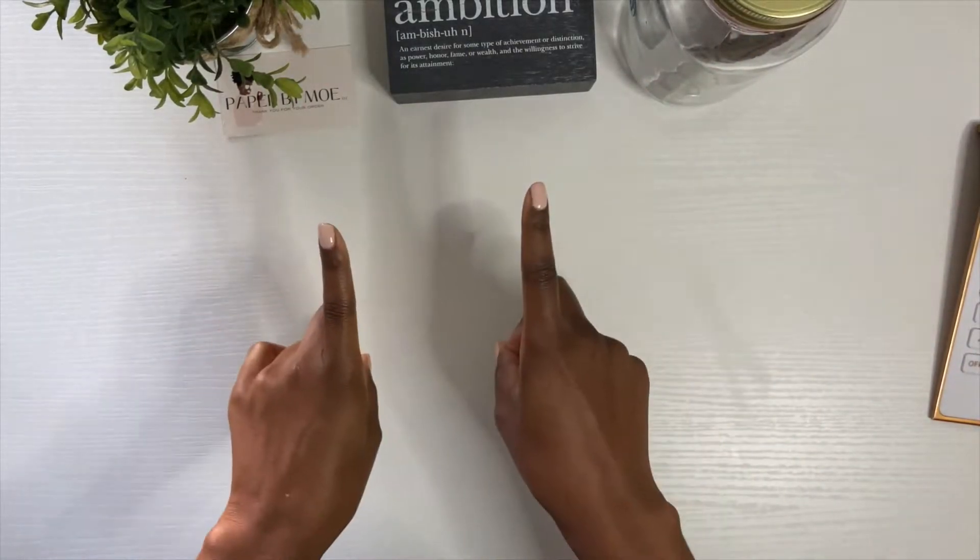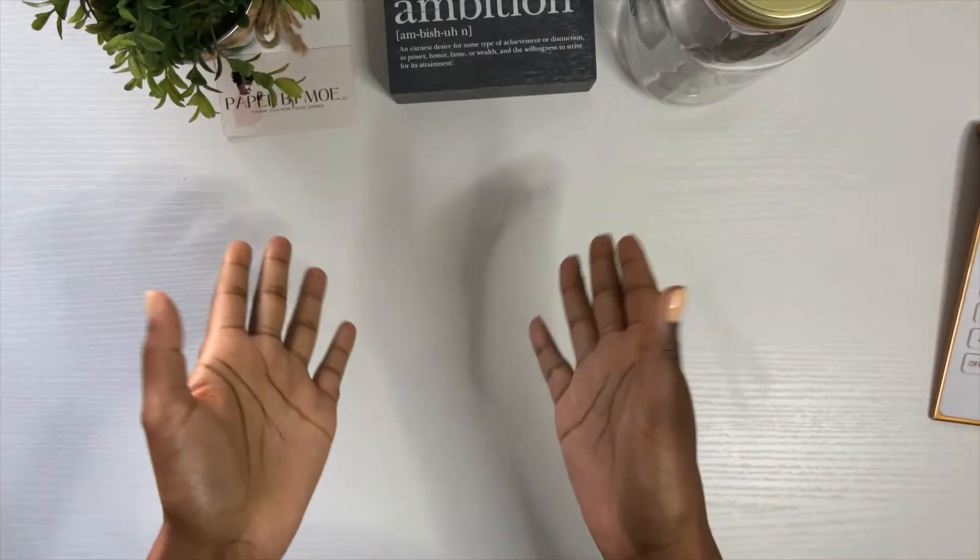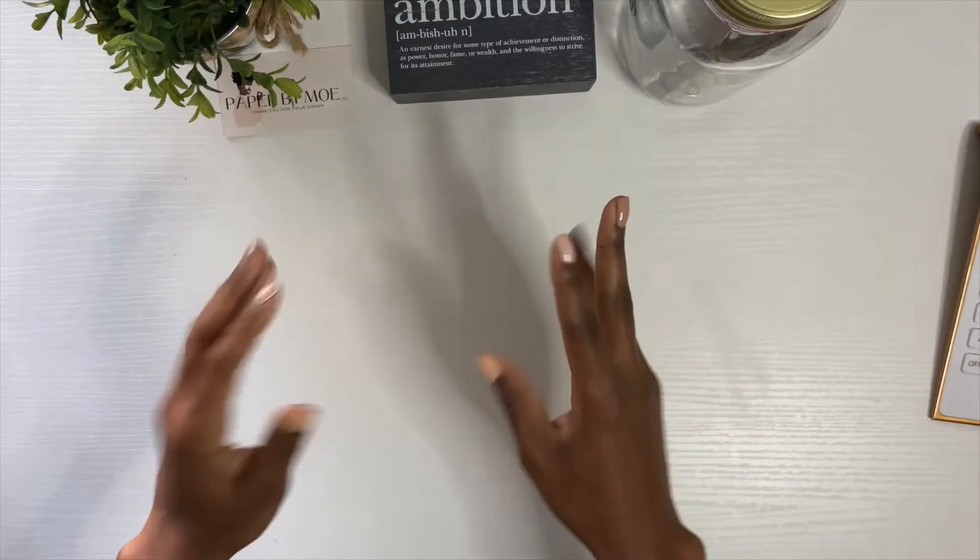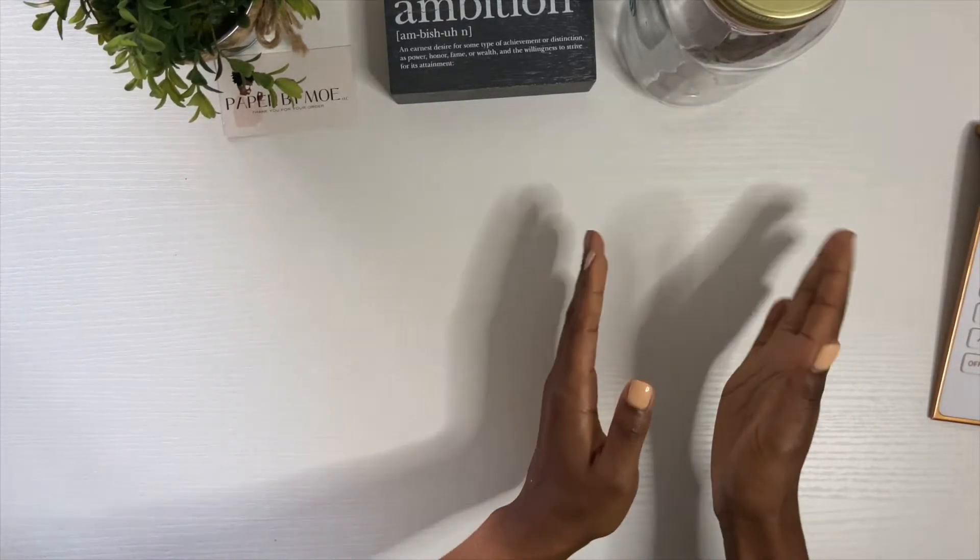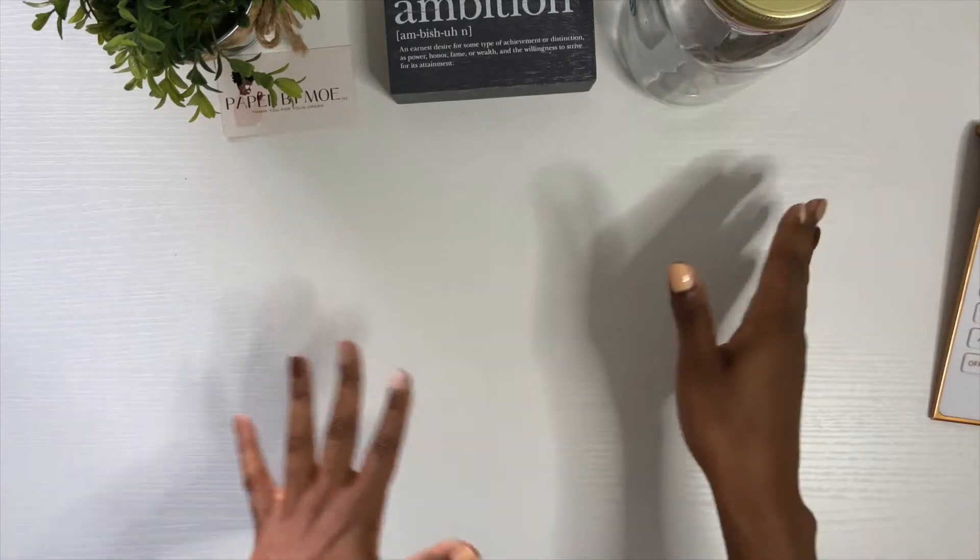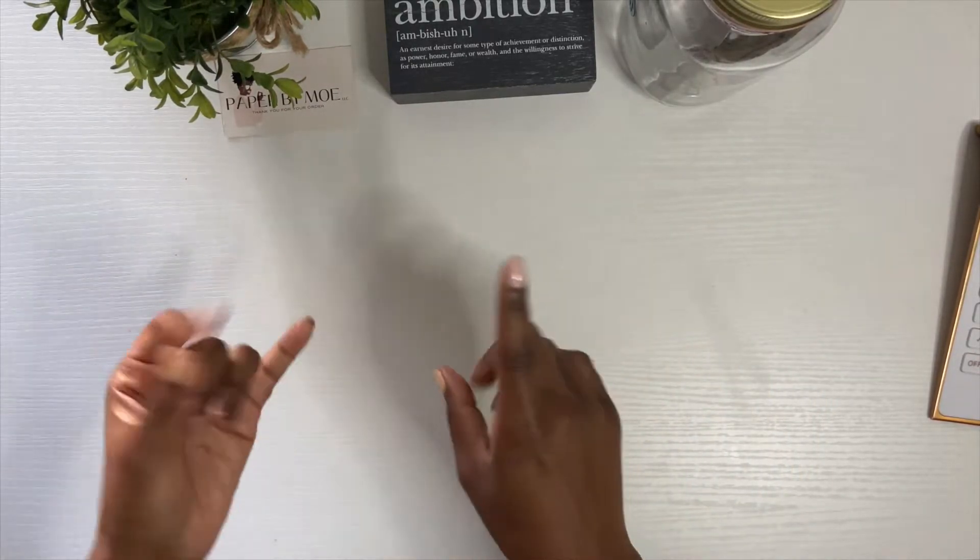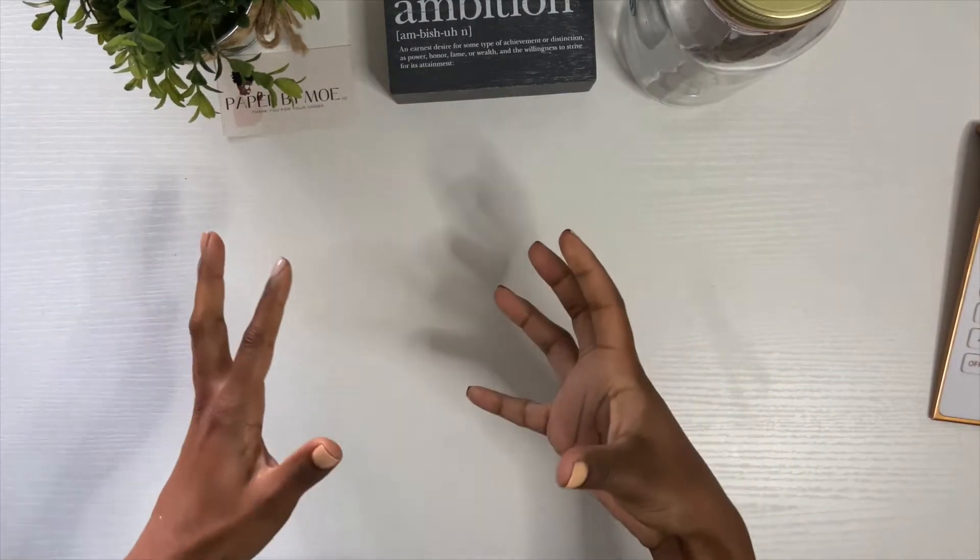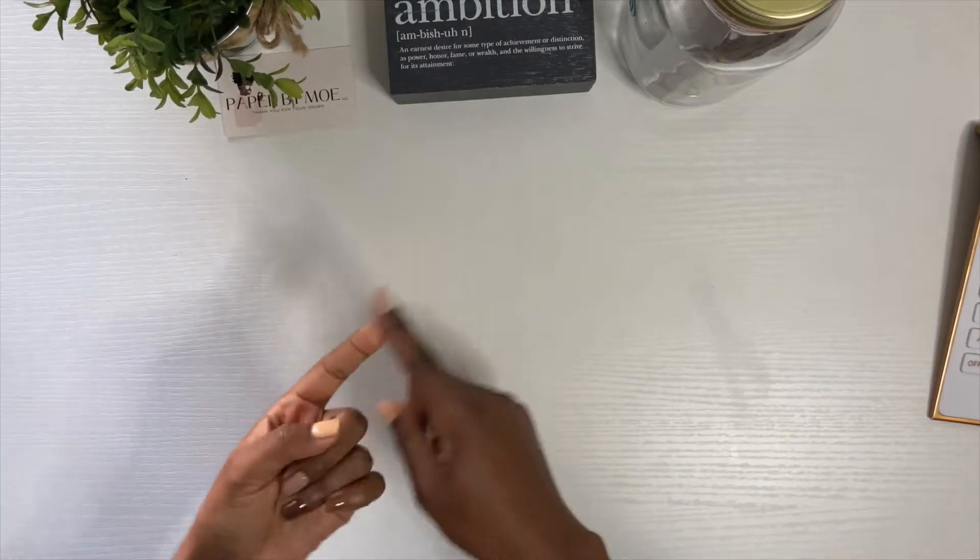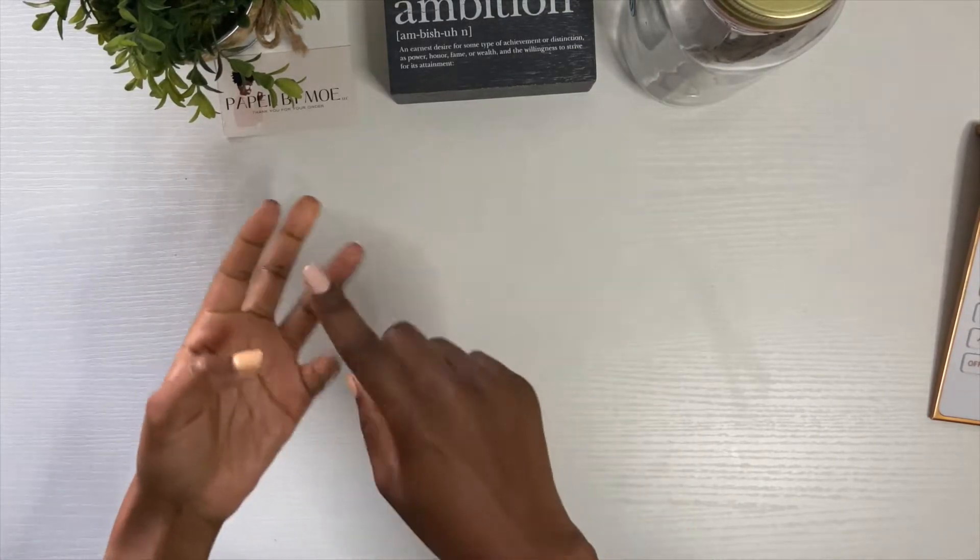Hey budgetees, welcome back to my YouTube channel. If you are new, my name is Mo, I'm 27, and I'm working on my financial freedom journey. I'm working on my budgeting, how I allocate my money, how I save my money, and paying off my six-figure student loan debt.